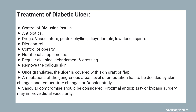Callous skin can be removed, and once granulation occurs, the ulcer is covered with a skin graft or flap. Amputation of the gangrenous area can be done, and vascular compromise should be addressed with proximal angioplasty or bypass surgery